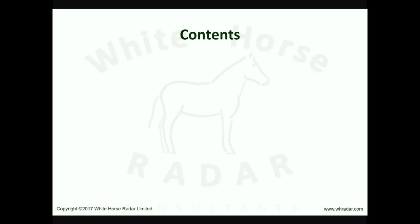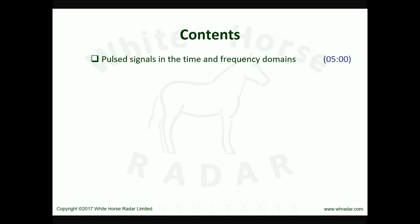This video presentation covers the following topics. We start by considering the features of a pulsed carrier signal in the time domain — that is, its waveform — and in the frequency domain, or its spectrum. The measurement of range is made from the time delay between the transmission of a pulse and the subsequent reception of an echo from a target. Since pulse delay ranging happens in the time domain, the signal's waveform is all important.